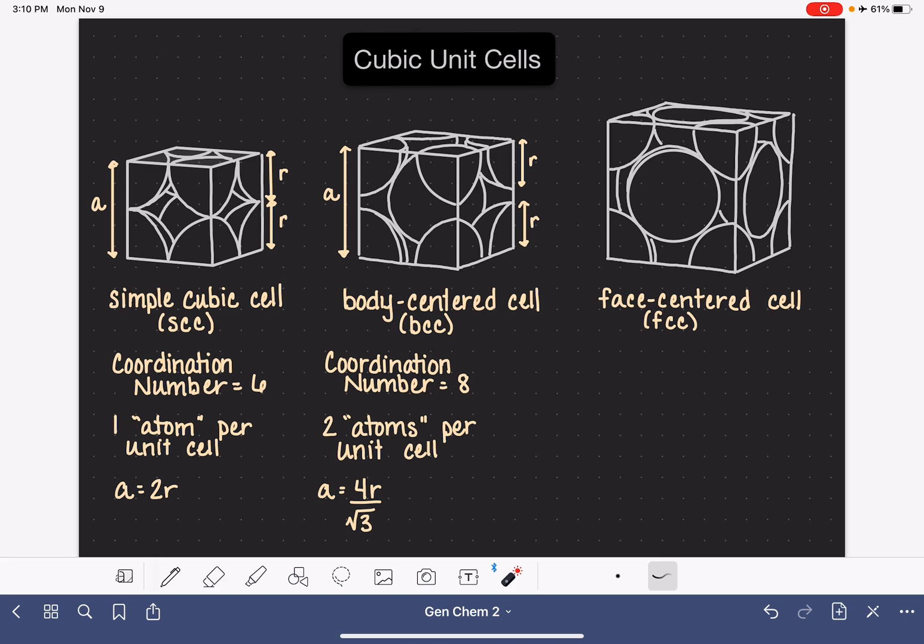So we're trying to understand the coordination number. How many atoms are in direct contact with any given atom in the unit cell? Let's focus on this half of an atom right here. We can see that this particular atom on the face is going to be in contact with the four atoms that are in the corners of that same face.